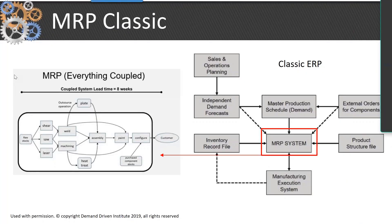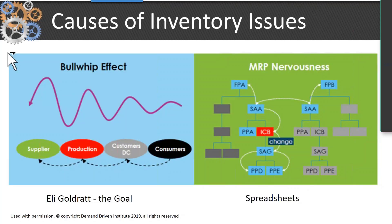Here's a classic MRP example. Sales and operations planning drives down the master schedule, and MRP explodes down through the product structure as we've seen. However, MRP can cause issues. If anybody has read Eliyahu Goldratt — I recommend anyone in planning read that book — the variations in supply and demand can cause what's called the bullwhip effect, giving you massive variations. MRP then becomes a very nervous sort of process, and typically spreadsheets are used to compensate for this.